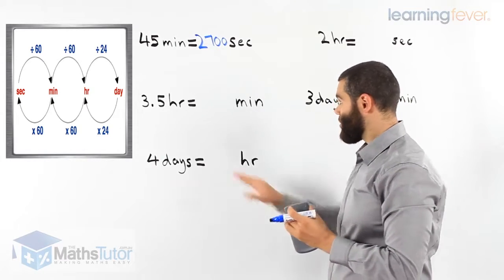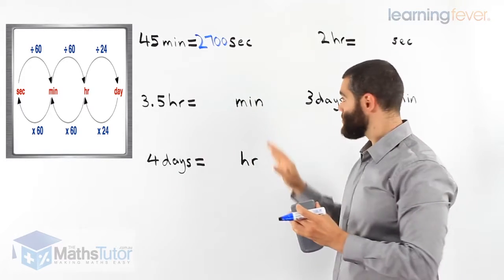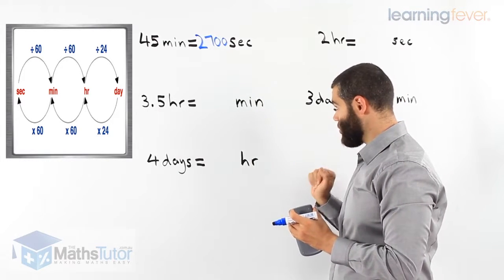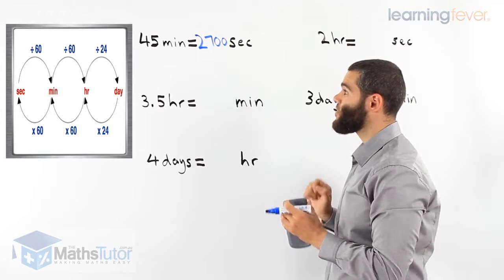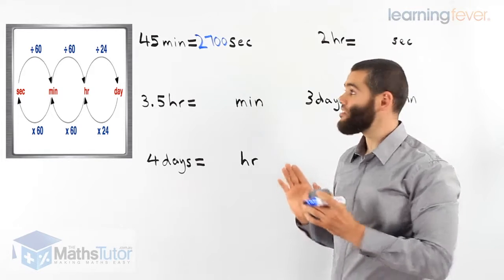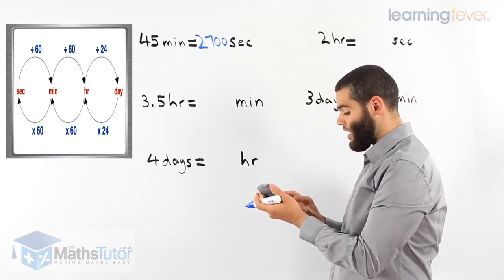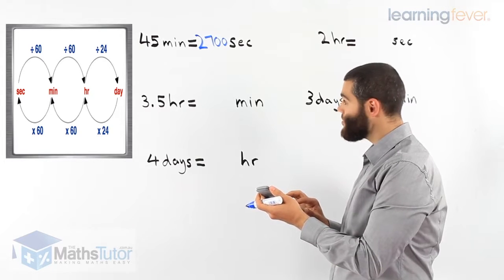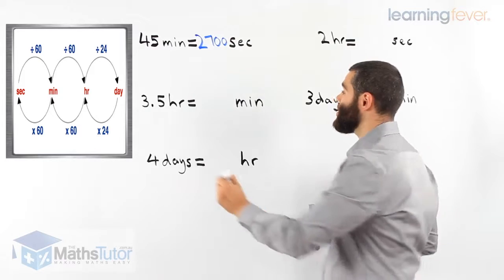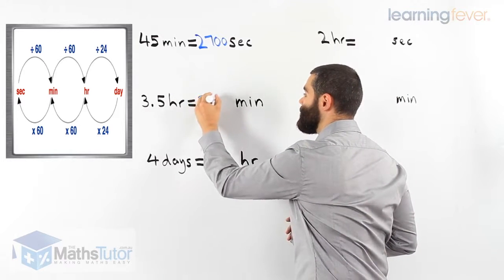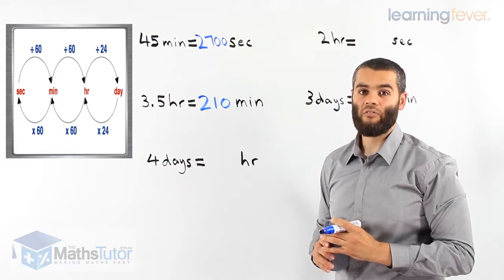Next example. Three and a half hours — we want to know how many minutes that is. We're going from hours to minutes. The process says we have to multiply by 60. So three and a half times 60 — our answer is 210 minutes. There are 210 minutes in three and a half hours.